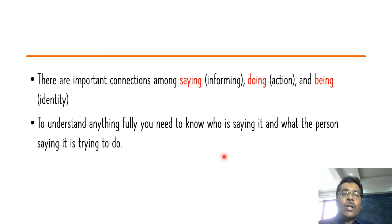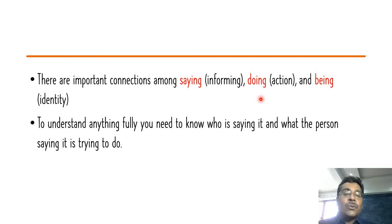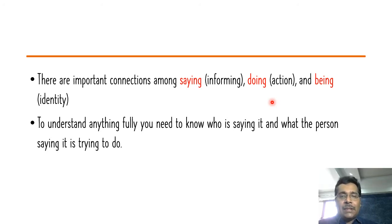When we communicate there are important connections: I am informing about an event, at the same time doing some kind of action, and also enacting an identity. There are very important connections between what is being said, what is being done, and what identity comes across — in other words, the connections between saying, doing, and being.